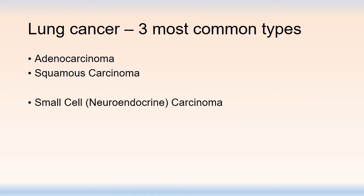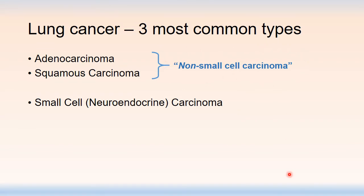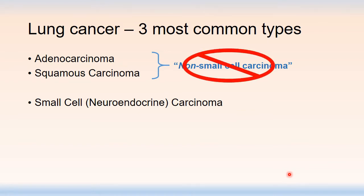Previous iterations of classification had small cell carcinoma and non-small cell carcinomas. This is not ideal because non-small cell carcinoma is left over from an era where we lumped all these tumors together due to limited understanding and limited treatment modalities. These days we have more specific treatments available for adenocarcinoma, squamous carcinoma, and small cell carcinoma, so we definitely need to categorize these appropriately.